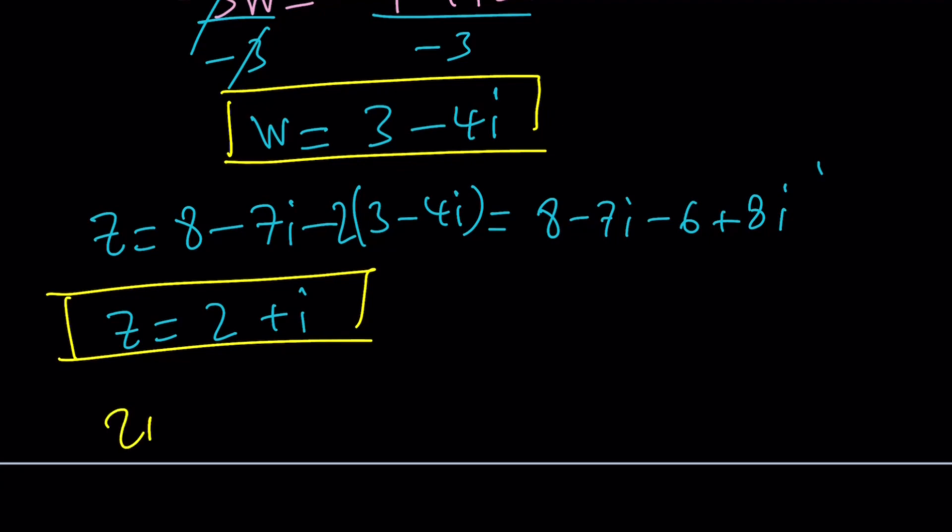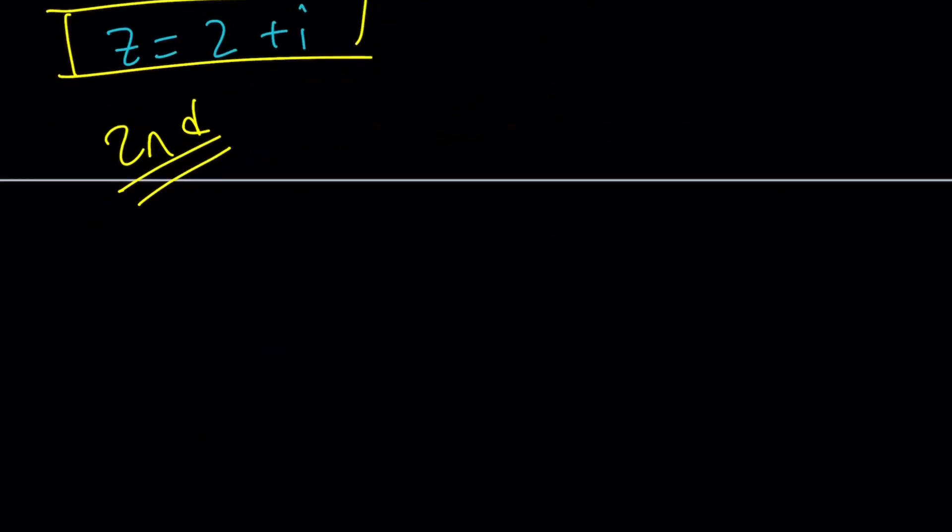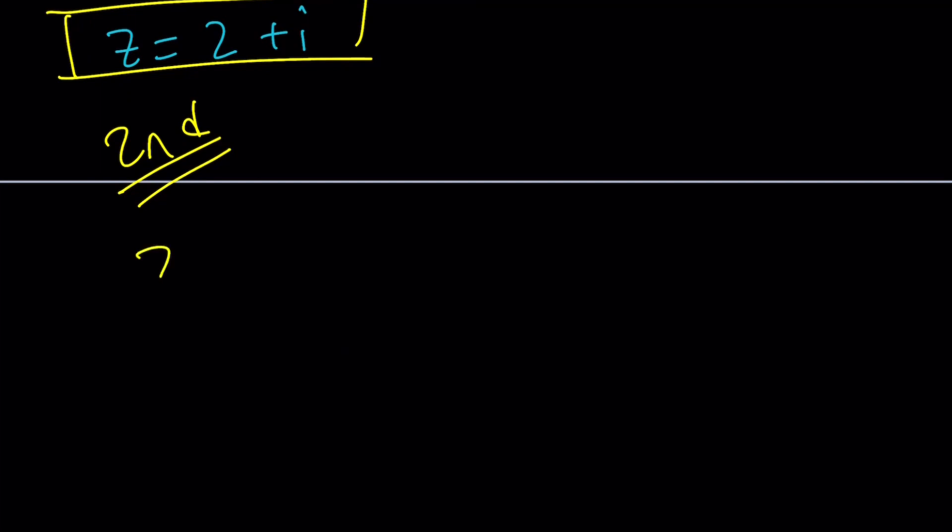Let's go ahead and talk about the second method. Second method uses elimination. So, how does elimination work? z plus 2w equals 8 minus 7i. And 2z plus w equals 7 minus 2i. I want to get rid of one of the variables. It doesn't matter which one, but I pick w. So, let's go ahead and multiply the second equation by negative 2.